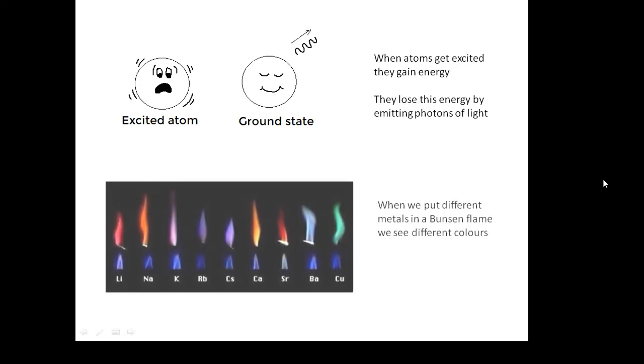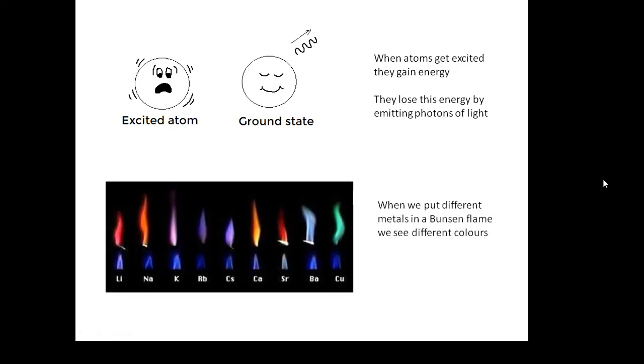Something very interesting is that different elements emit different wavelengths of light. There's a thing they do in chemistry called a flame test, where they put different elements in a Bunsen flame. When you do this, you get different colours, because different elements emit characteristic colours of light.